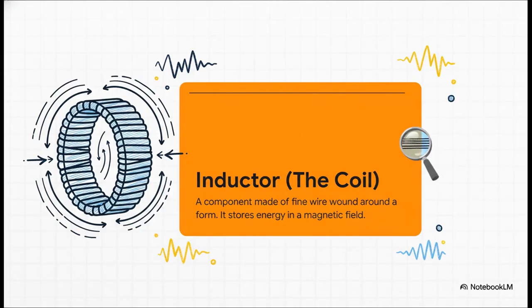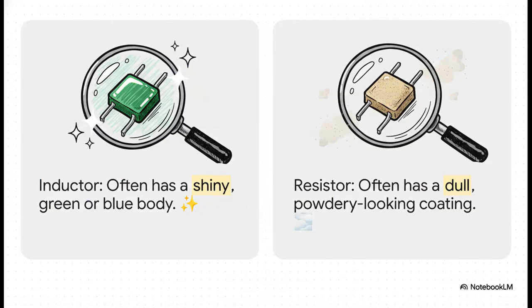First up, the inductor. At its heart, it's just a coil of super fine wire. We're talking sometimes thinner than a single human hair, wrapped around a core. Its whole job is to take in electrical energy and store it, but as a magnetic field. It basically soaks up energy and holds it magnetically.